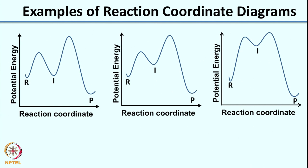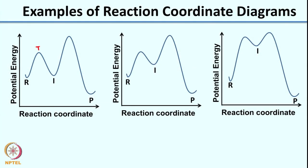So now we will do a similar exercise. I would like you to look at these three reaction coordinate diagrams, figure out which is the rate determining step, and represent these reactions using R going to I going to P as arrows below each reaction. You can press the pause button and do this exercise. In the first case, if I compare TS1 and TS2, the energy to get to TS2 is higher than TS1, so this would be the rate determining step.